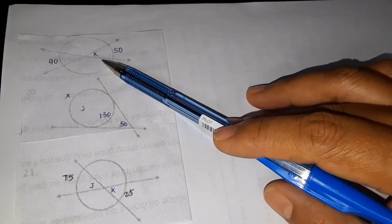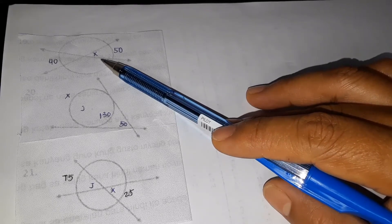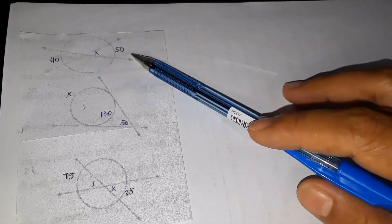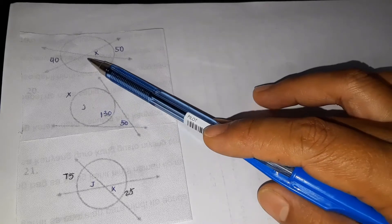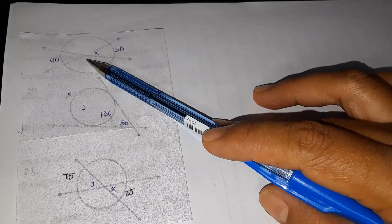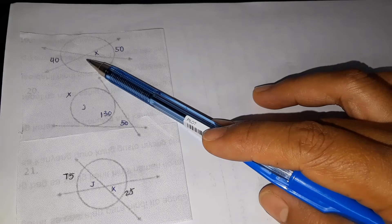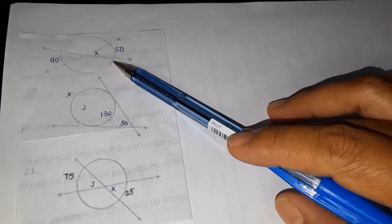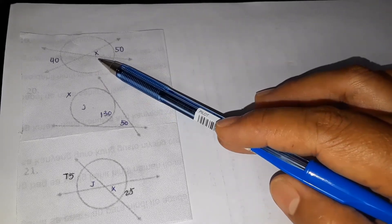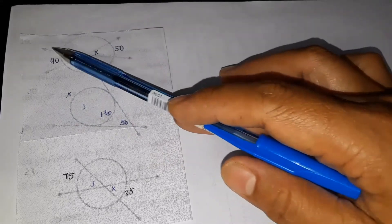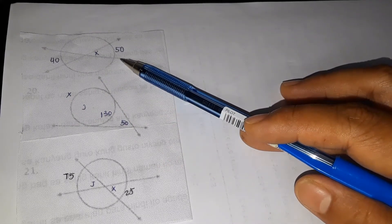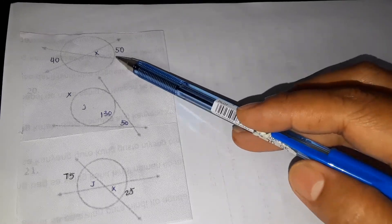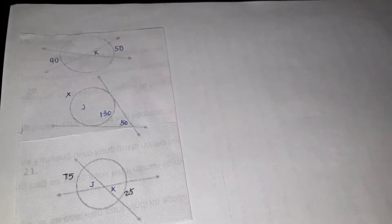So the measure of an angle formed by two secants intersecting within a circle, inside, equals one half the sum of the measures of intercepted arc. I'll repeat, the measure of an angle formed by two secants intersecting within a circle equals one half the sum of the intercepted arc.